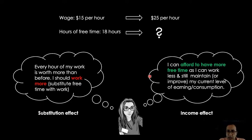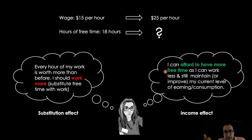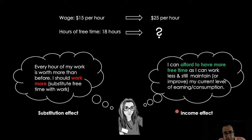But at the same time, Sarah thinks that life is not just about working more and more and earning more money. She says: I can now afford to have more free time, because I can work less and still maintain or even improve my current level of earning and consumption. We call this the income effect. As people become richer and richer, they become more willing and able to afford more time, and therefore they decide to work less.